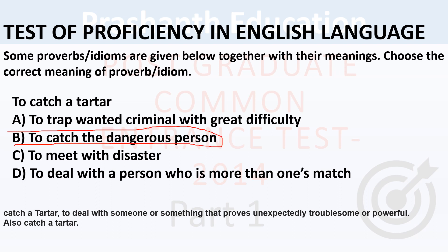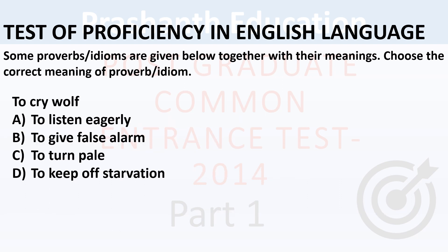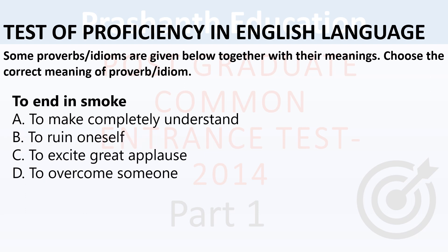So correct answer is B — to catch the dangerous person. Next proverb: 'to cry wolf' — options: to listen eagerly, to give false alarm, to turn pale, to keep off starved. Next: 'to end in smoke' — options: to make complete understanding, to ruin oneself, to excite great applause, to overcome someone. Correct answer: B — to ruin oneself.